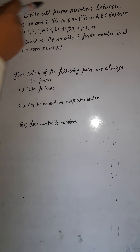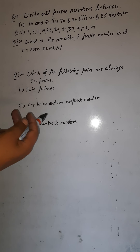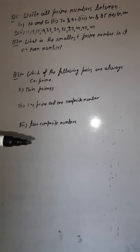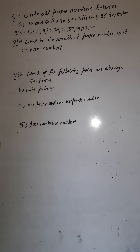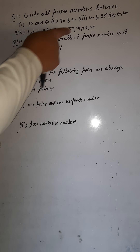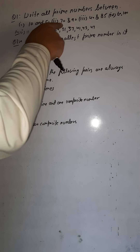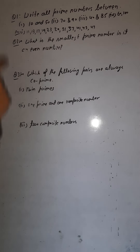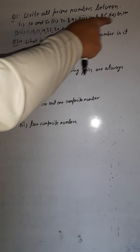For the second part, write prime numbers between 70 and 90 on your own. Remember: prime numbers are numbers which have only two factors, which are divisible only by themselves and by one — like 11 is divisible only by 1 and 11, or 41 is divisible only by 1 and 41. Similarly write the prime numbers between 70 and 90, and the rest of the questions on your own.